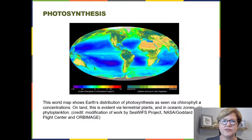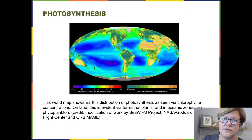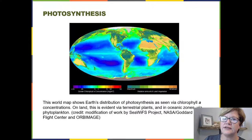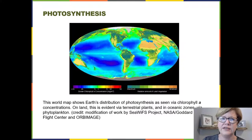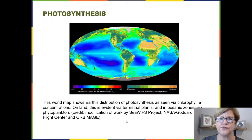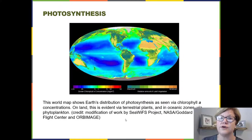This chapter is about photosynthesis. Photosynthesis means the synthesis of organic compounds — carbon-containing compounds — from inorganic carbon compounds, which means carbon dioxide. And photo refers to light. Light energy will be transferred and transformed into the bonds of organic compounds like glucose.